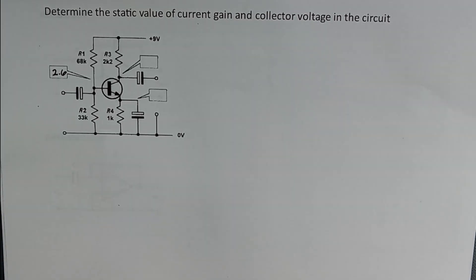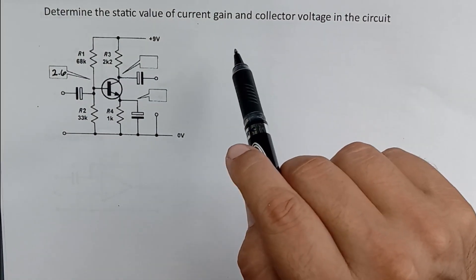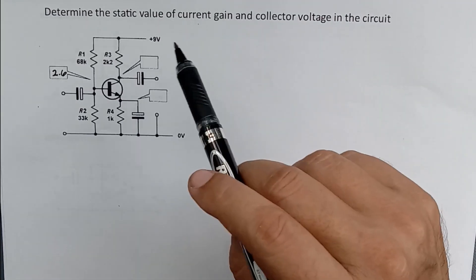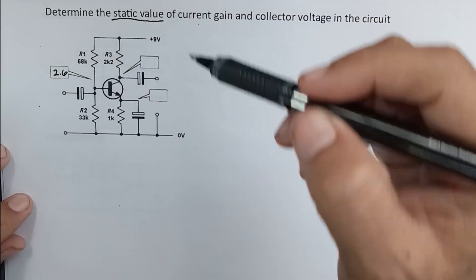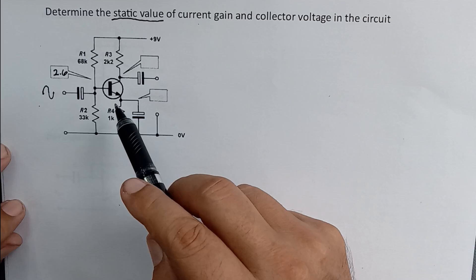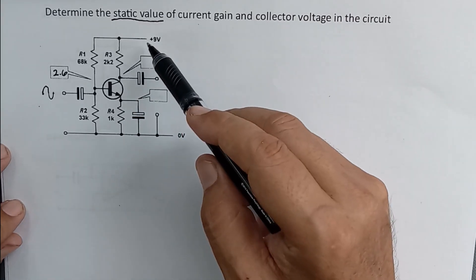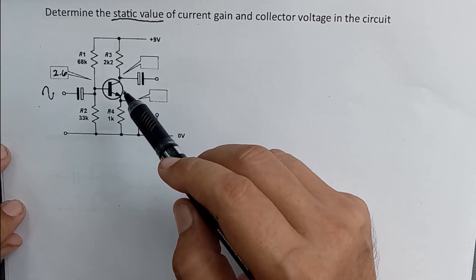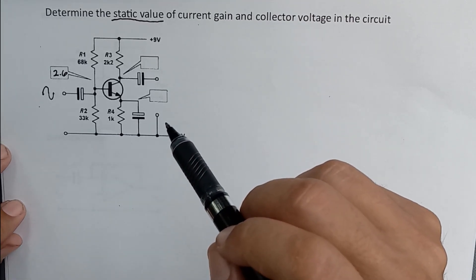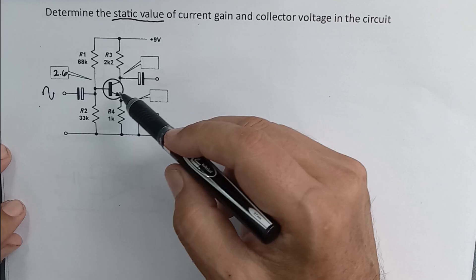In this video, let's solve a transistor amplifying circuit using a transistor in a common emitter configuration. The question asks us to determine the static value of current gain and collector voltage. The static value refers to the quiescent state of the amplifier, meaning we only have DC bias voltage — no input signal. We need to calculate the current gain and collector voltage.